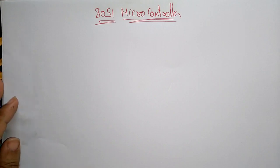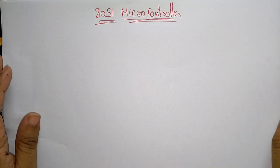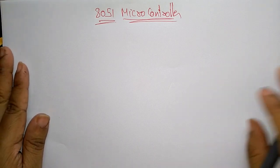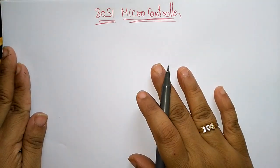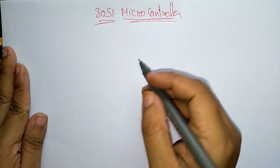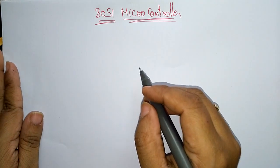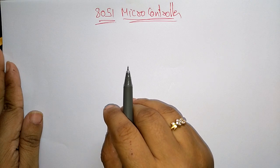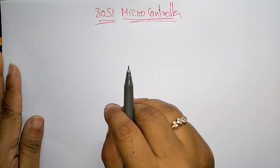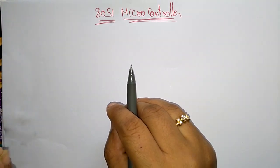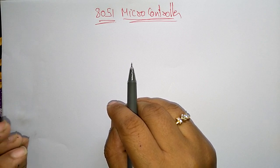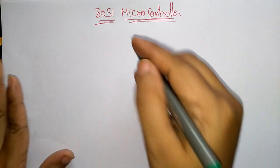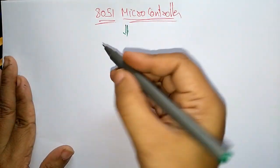Hi students, coming to the next topic in the subject microprocessor: the 8051 microcontroller. So far we have discussed about microprocessor; now let us see what is this microcontroller. A microcontroller is a small and low-cost microcomputer which is designed to perform the specific task of embedded systems, like displaying microwave information, receiving remote signals, etc.